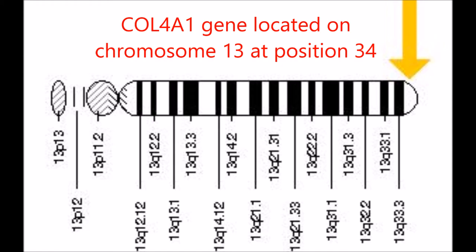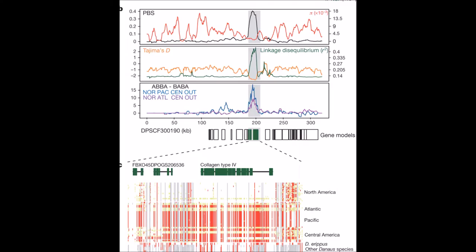Take a look at this figure from Kronforst's study. This graph displays certain sections of the genome of multiple species of monarch butterflies. Notice the region that is slightly shaded — this region codes for the collagen 4 alpha protein. This figure shows that there is a spike in linkage disequilibrium for this section of the genome, meaning there is a difference in the locus between North American monarchs and the rest of the monarchs.